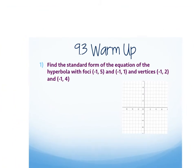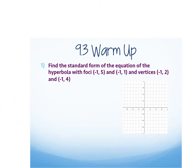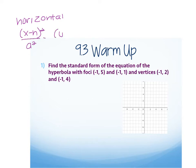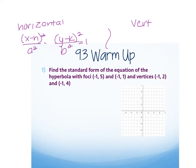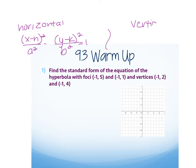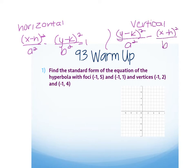The equation for a hyperbola: if it's a horizontal hyperbola, it's x minus h squared over a squared minus y minus k squared over b squared equals 1. If it's vertical, then it's y minus k squared over a squared minus x minus h squared over b squared equals 1.